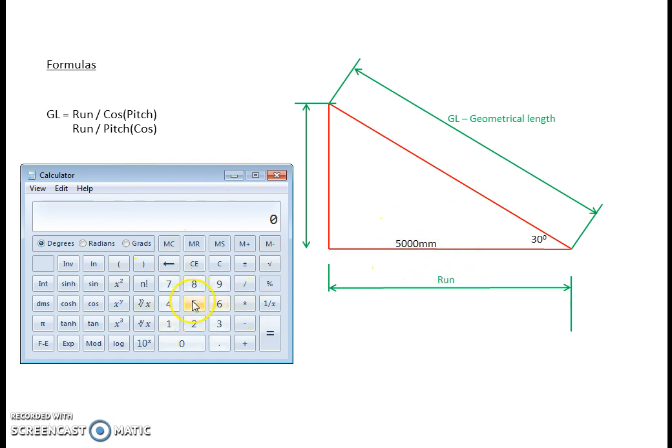I'm going to throw in my run, let's just simply run, divided by, now I'm going to throw in the pitch in degrees, in this case 30. Now I'm going to hit the cosine button. Finish off with equals, and that gives me a length of 5773.5. I'll round that up to 5774 for my geometric length.